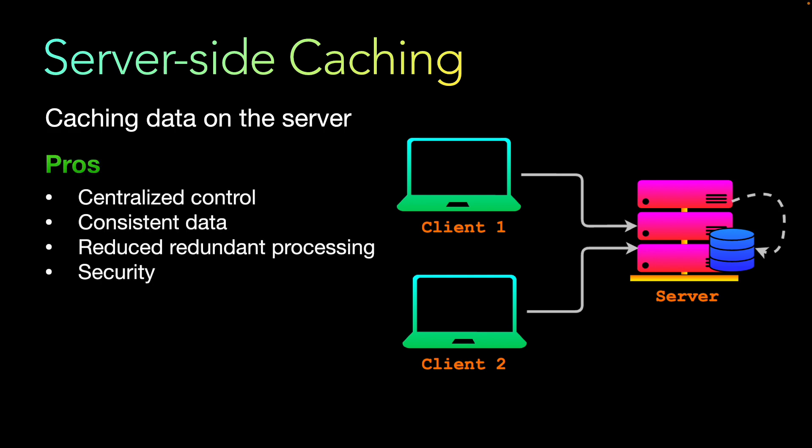The pros are: it is centralized control — it is easy to manage, update, and invalidate the cache data. It is consistent because it ensures all clients receive the same data since it is cached in one place. It reduces redundant processing because there is no need for repeated computation on the server since it's already stored there. It is also more secure because sensitive data remains on the server.